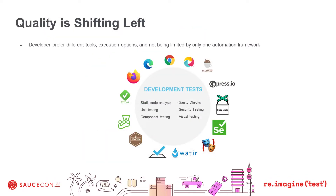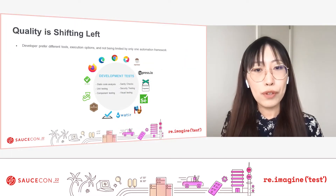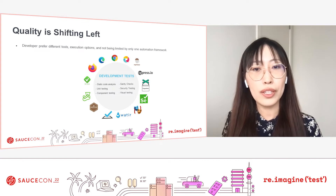There are many unique challenges developers face when quality begins to shift left. As engineers assume more responsibility for the quality of code they create, they do so knowing it has the potential to accelerate release cycles, improve their productivity, and overall allow them to create better experiences for customers. But just considering functional testing — represented here by unit and component testing — there has been an explosion in the number of different automation tools, test runners, and infrastructure requirements. It's becoming an increasingly crowded space, born from the fact that developers need to ensure they can incorporate quality without slowing down any other process.